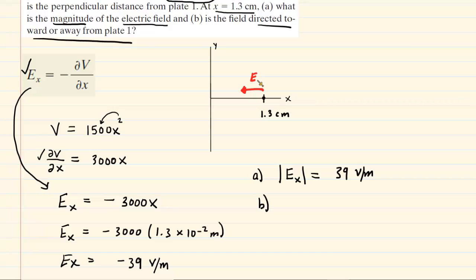That would be the direction of our electric field. So the direction is to the left and the way in which they asked us the question, we could say that it will be towards plate 1. Because plate 1 in our picture was located right here along the y-axis at the origin. So that would be the correct answer to Part B.